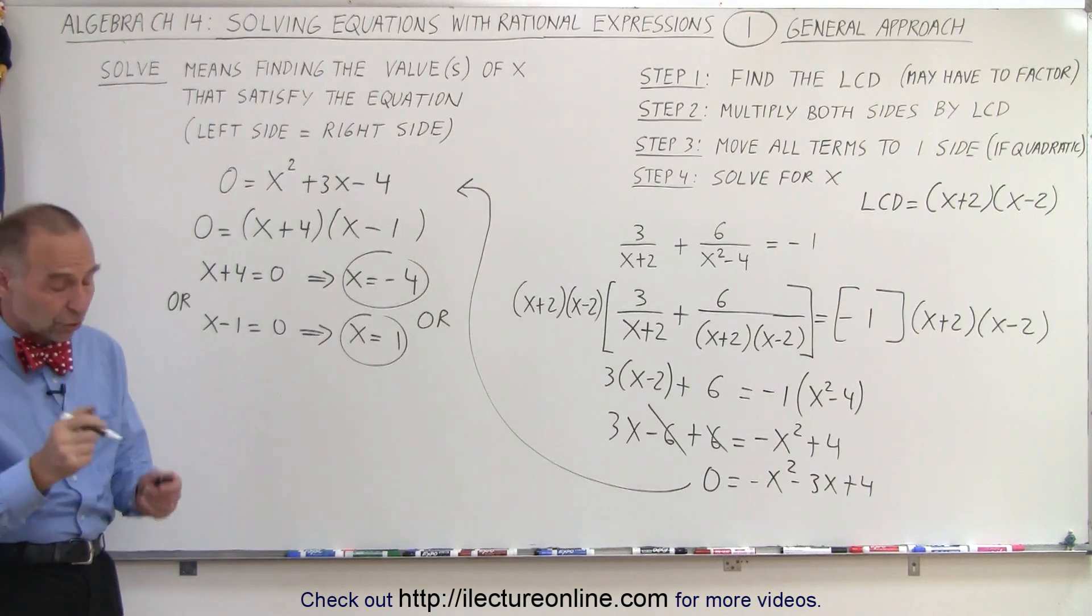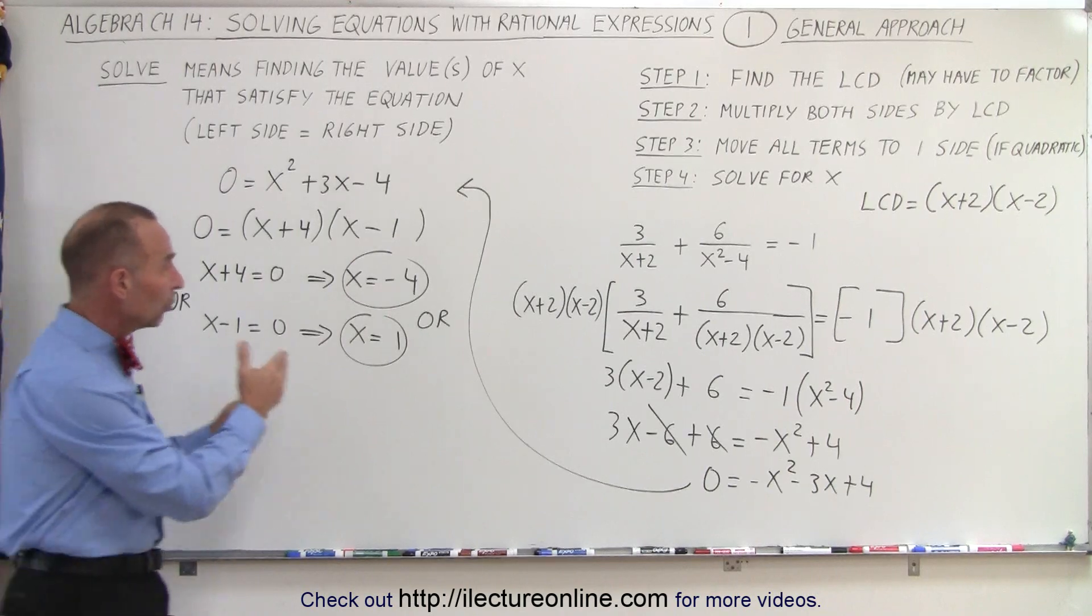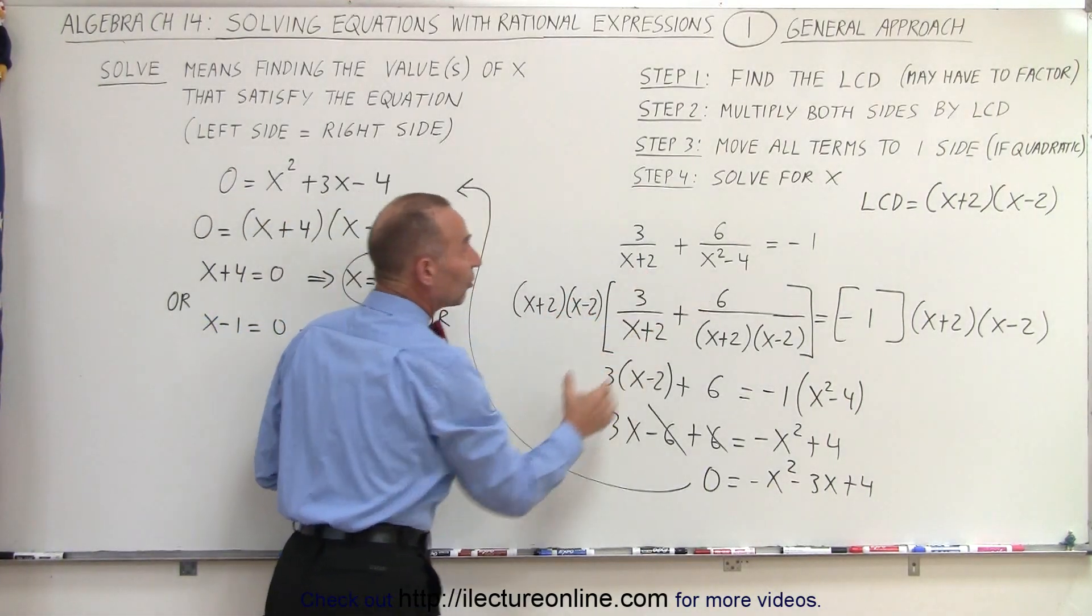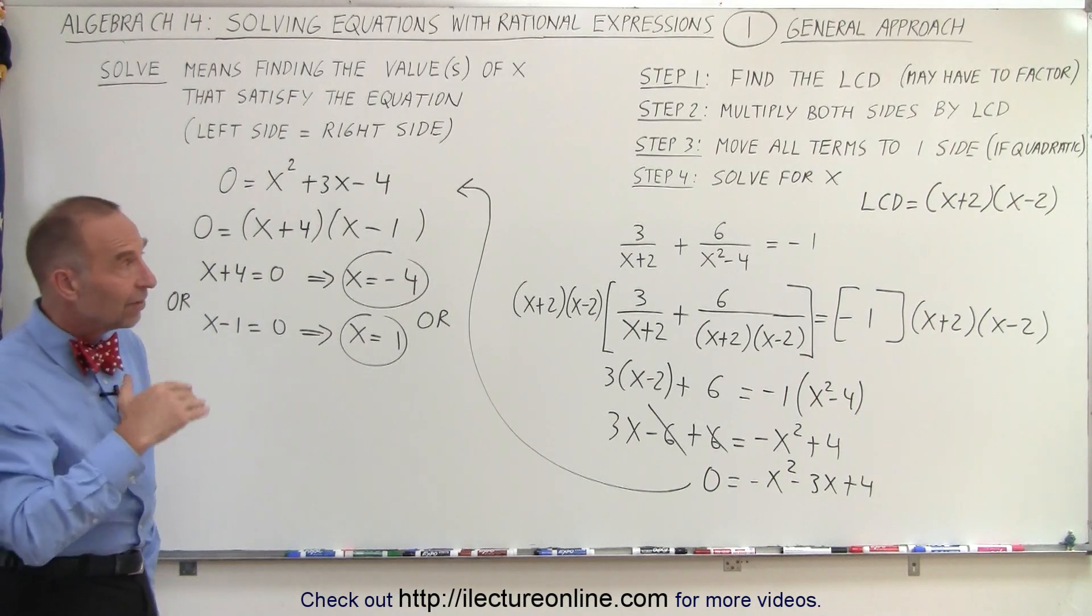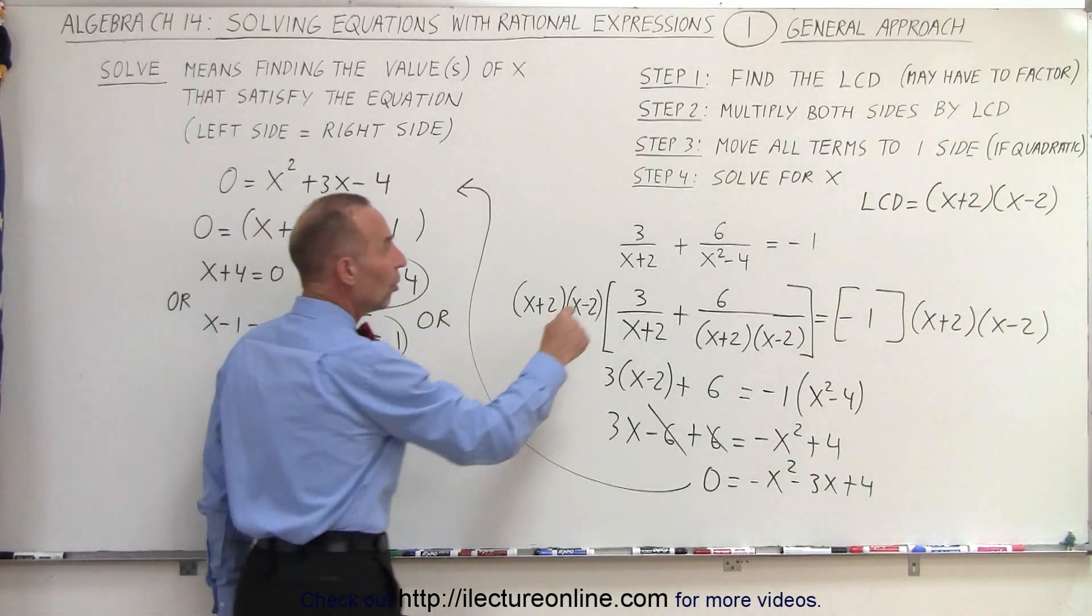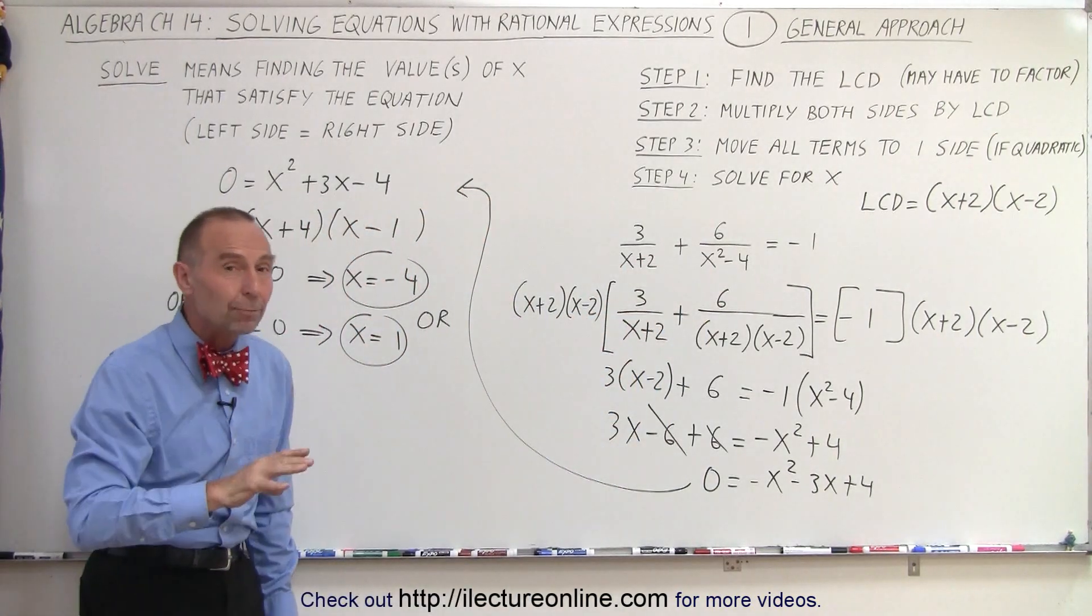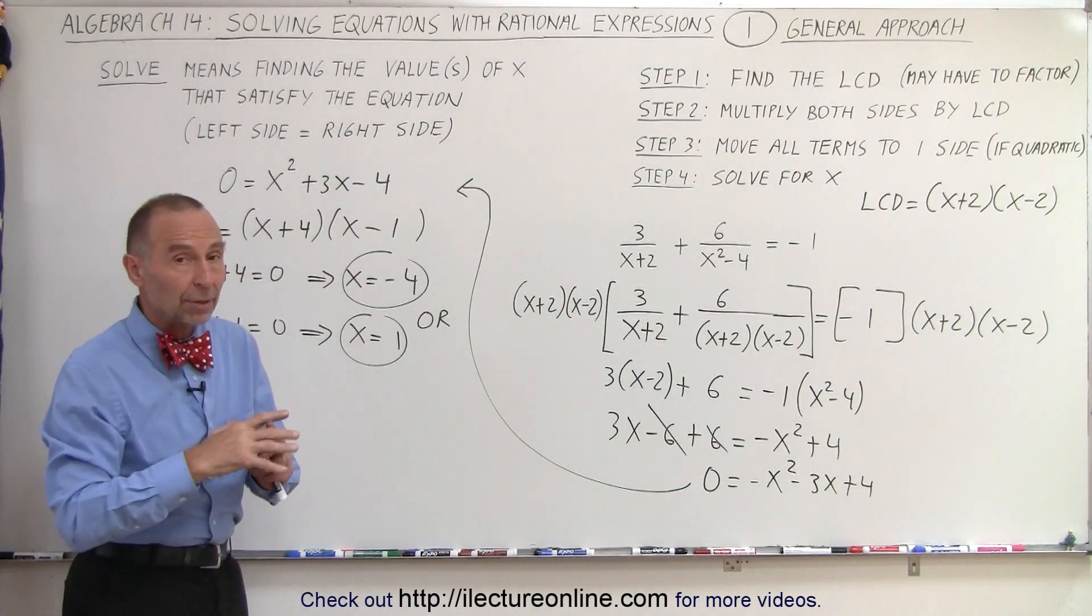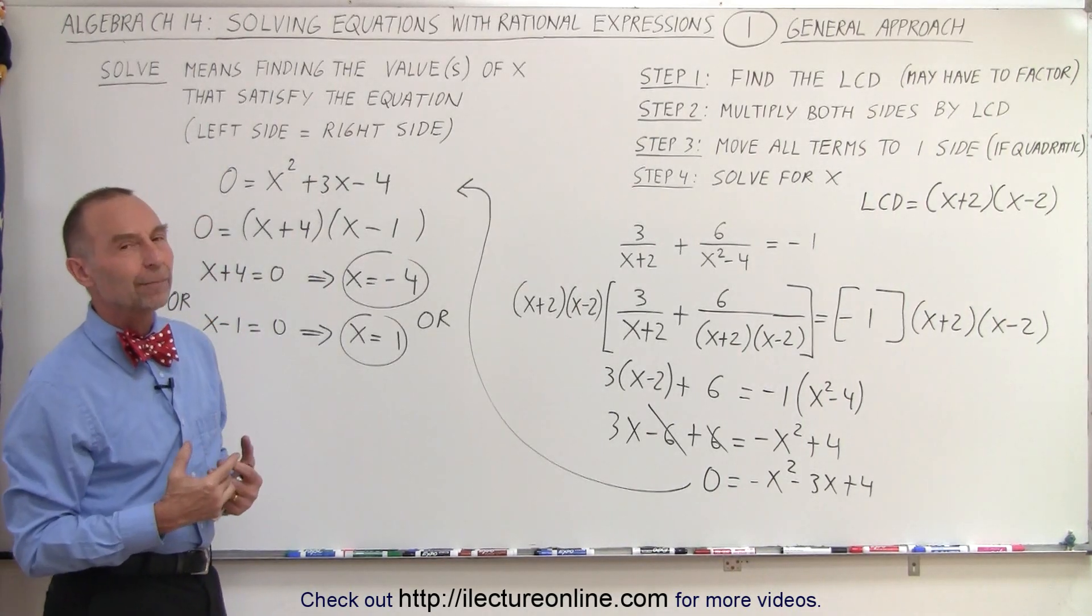Now, what we need to do here is a couple of things. First of all, we can plug those values into our original equation to see if that indeed satisfies the equation. And secondly, since we have rational expressions, there are denominators, and there are certain values that x cannot be because that would make the denominator go to 0. And of course, we cannot divide by a 0 denominator because that is undefined.